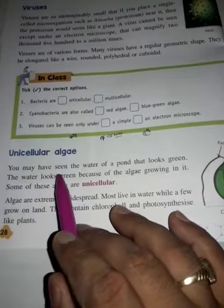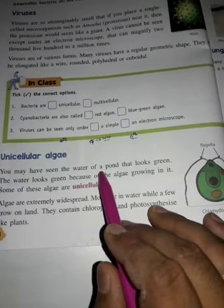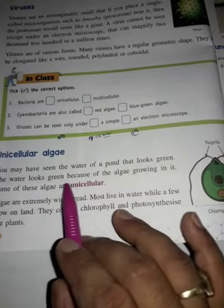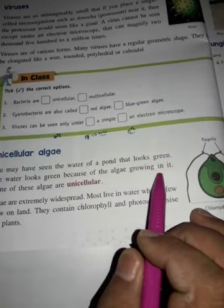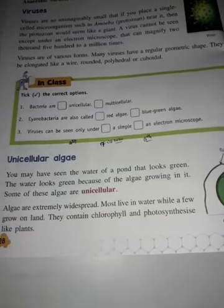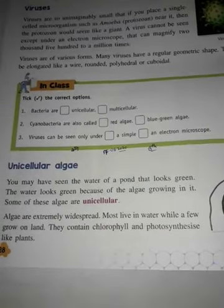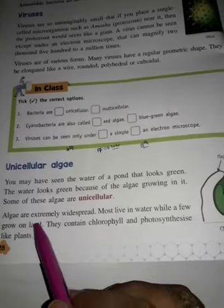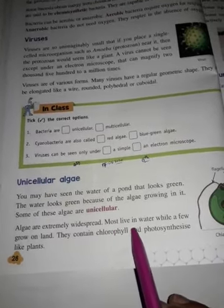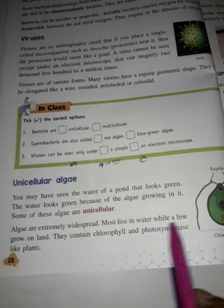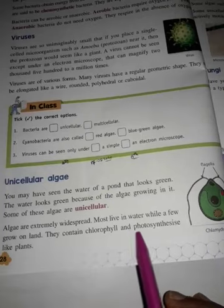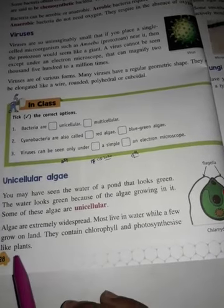You may have seen the water of a pond that looks green. The water looks green because of the algae growing in it. Some of these algae are unicellular. Algae are extremely widespread — most live in water while a few grow on land. They contain chlorophyll and photosynthesize like a plant.